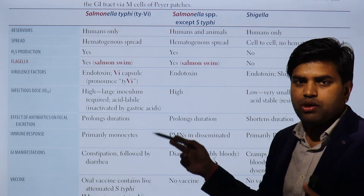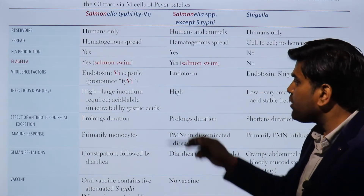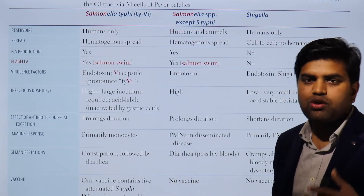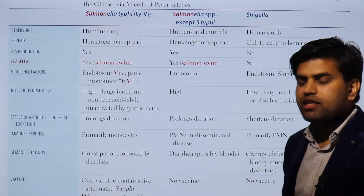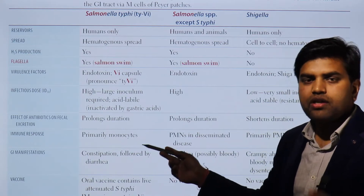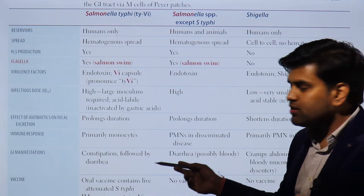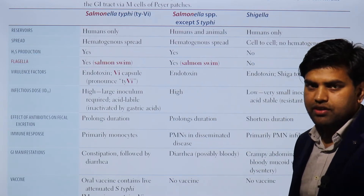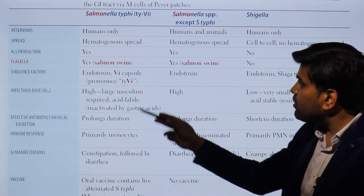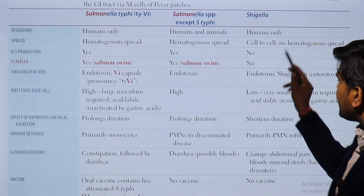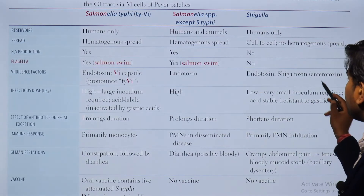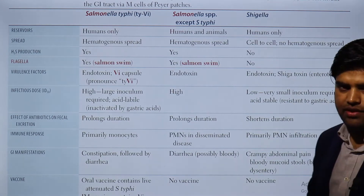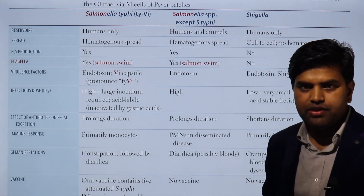Regarding infectious dose: Salmonella requires a high inoculum because it is susceptible to gastric acid and can be killed in the stomach. However, if a patient is on proton pump inhibitors or antacids (reducing gastric pH), a low dose can cause infection. In people not on antacids, a high inoculum is needed to cause typhoid or gastroenteritis. Shigella requires only a very small inoculum — it is heat-stable and resistant to gastric acid.